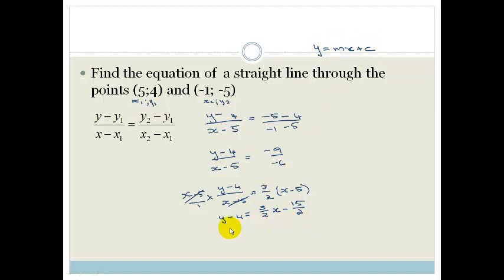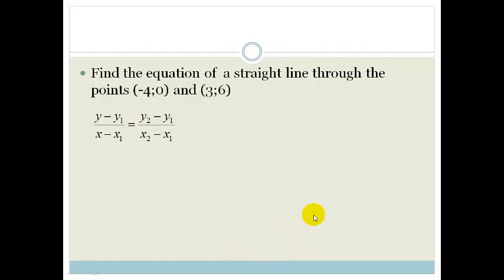Now, to get this, all we have to do is take the 4 across. So, we've got y is equal to 3 over 2x minus, and just to make this easy for ourselves, we're going to make this 7 and a half, plus 4. So, therefore, you get y is equal to 3 over 2x minus 3 and a half. Right, not too difficult. Hey, let's do another example just to make sure you guys have really got to grips with this.